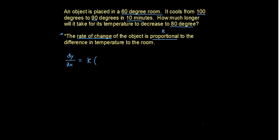So the difference in temperature, and the difference in temperature is our object, however that temperature, what that temperature is, y, minus the degrees in the room, which is 60. So that's the difference in temperature between the room and our object.